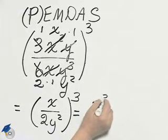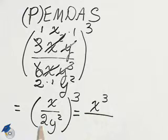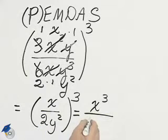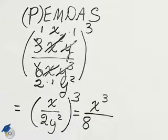x cubed, 2 cubed is 8. Coefficients normal, y squared cubed, power rule, y to the sixth.